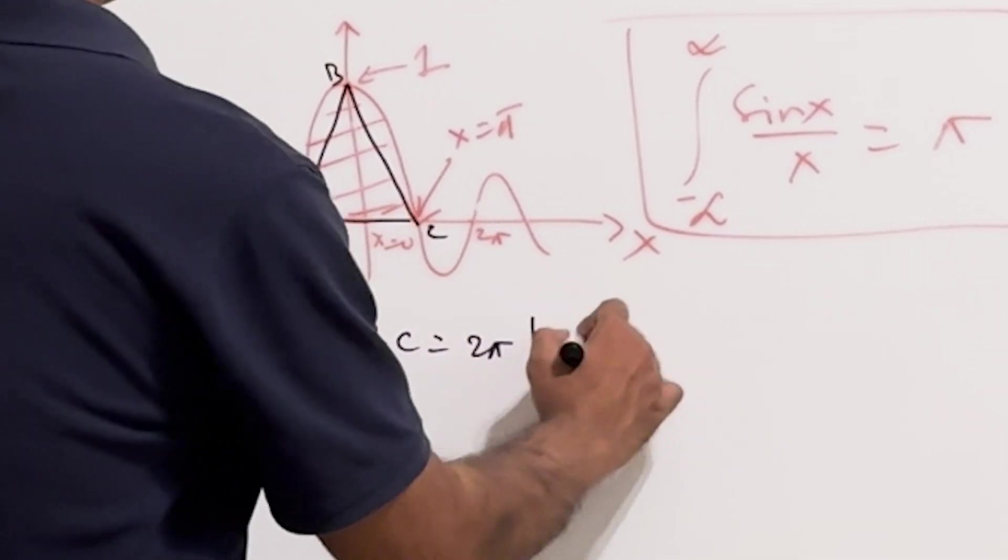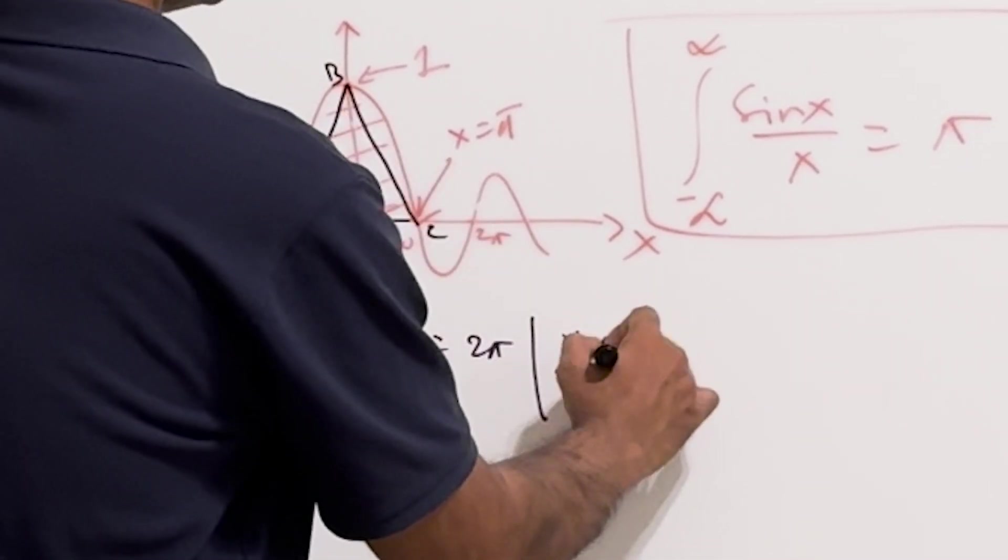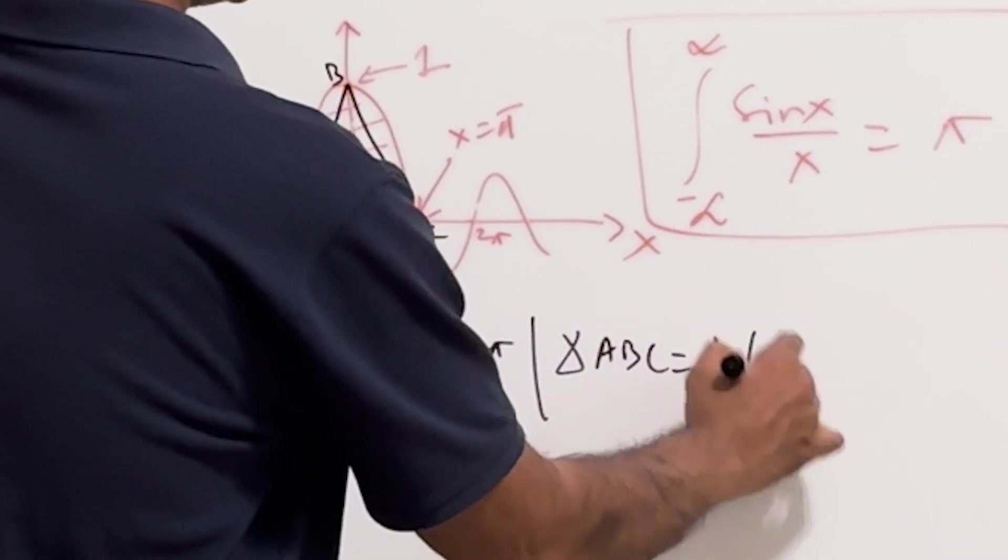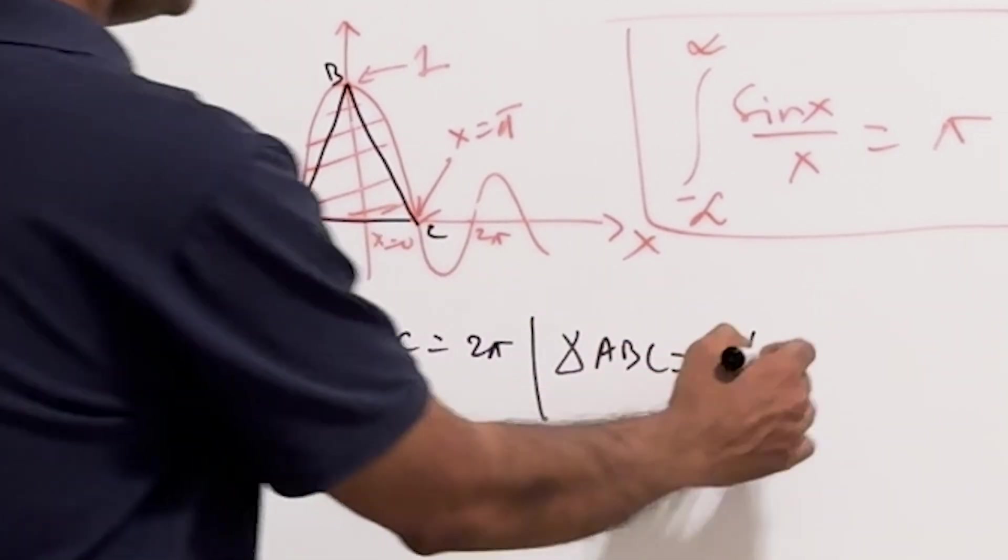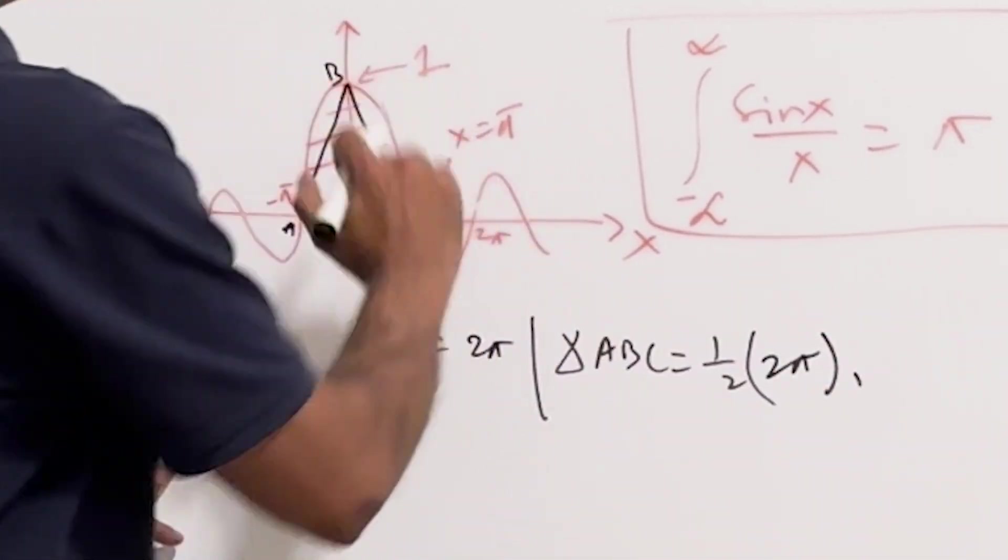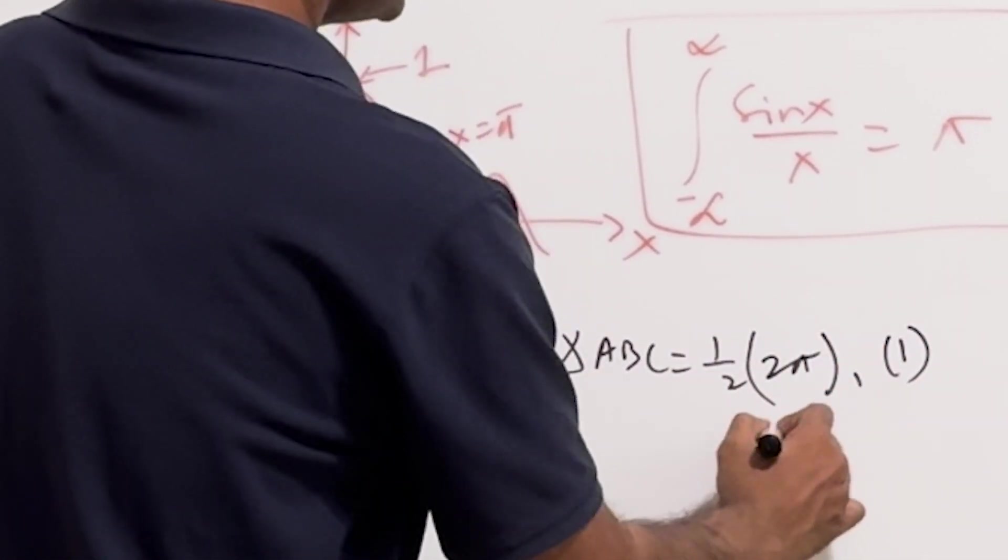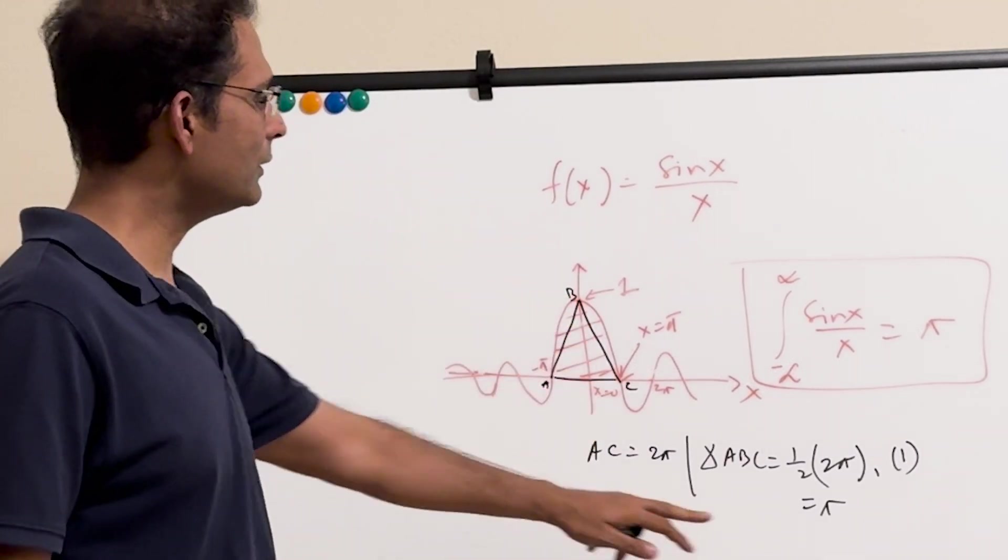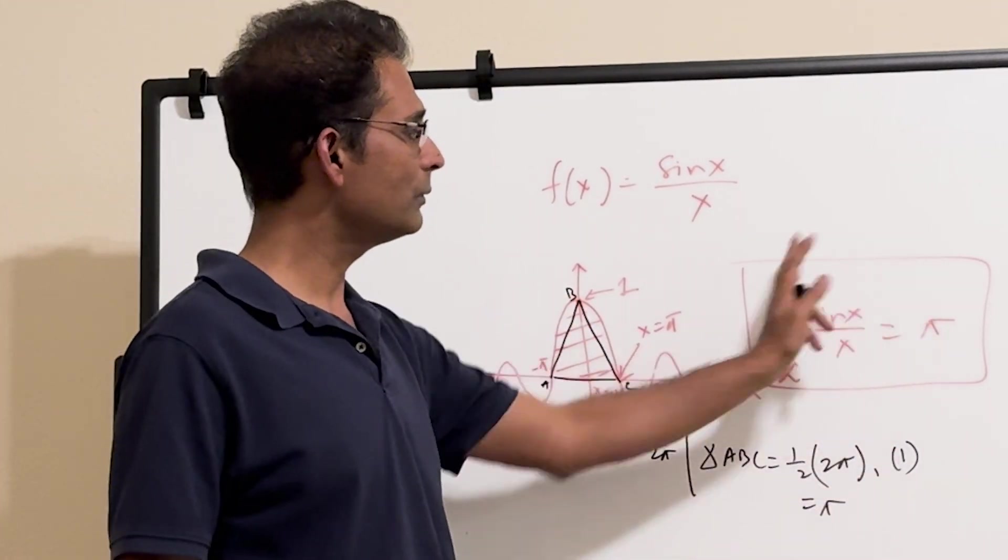So the area of the triangle ABC is half times the base, which is AC, which is 2 pi, times the height, which is 1. So this is just pi.